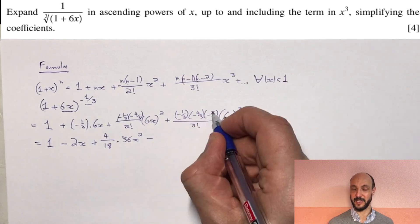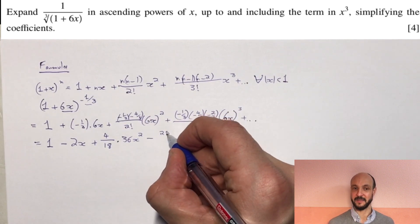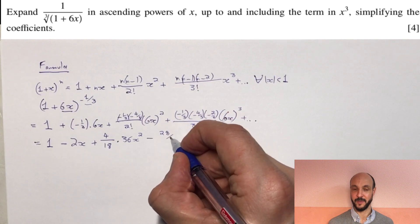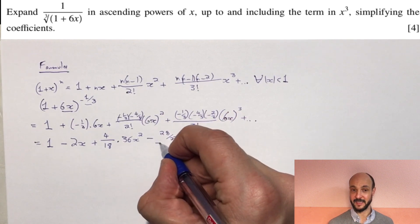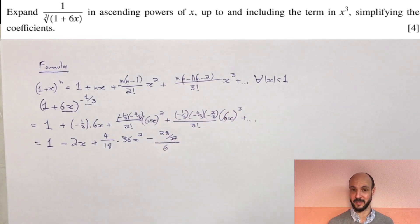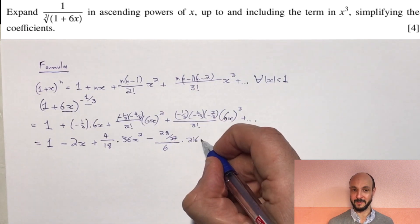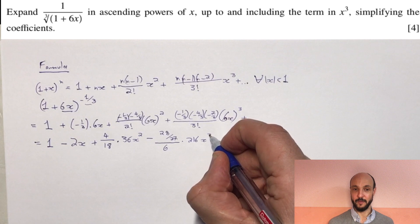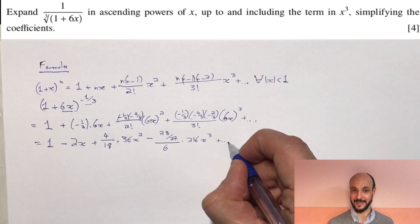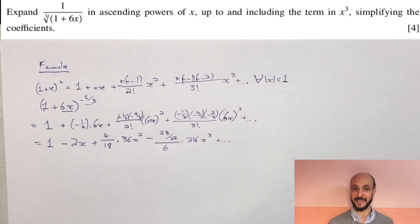We can always check, first of all, our negatives. We've got negative times negative there, so this was clearly going to be a positive. If we look at the negatives in the next term, we've got negative times negative times negative, so this is going to be a negative. And on the top, we've got 4 times 7, which is 28, over 3 times 3 times 3, which is 27. And then that's divided by 6. And that's all times by 216x cubed.